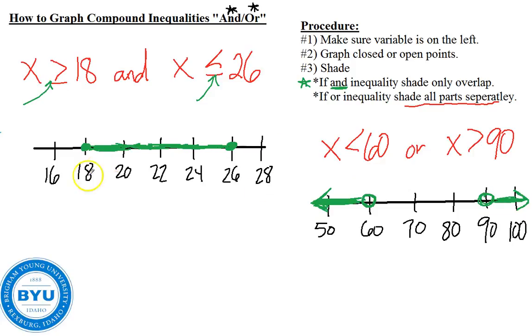Notice that and inequalities shade inside the points. And or inequalities shade outside the points. I often think of the word or as boat oars. You know, boat oars coming out of the boat would shade outside. You know, you'd have boat oars if this were your boat. Here's the boat. You know, I'm not much of a drawer, but you guys get the idea. If we were in a boat, the oars would shade to the outside. That's how I remember that or shades outward.